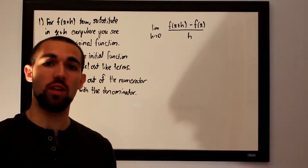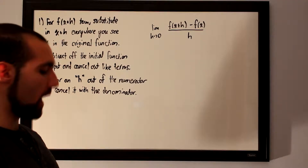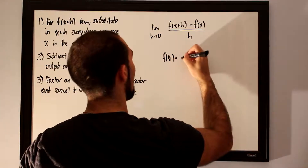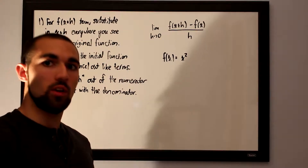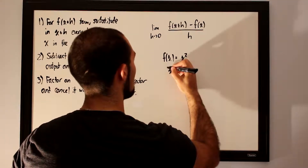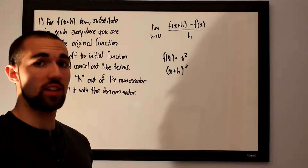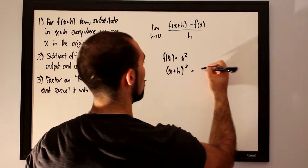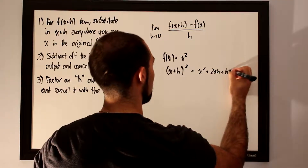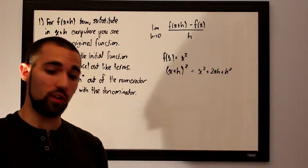All you really need to do is substitute in x plus h wherever you see x in the initial function. Say we have the function f of x equals x squared. Wherever we see x, replace it with x plus h, so this becomes x plus h squared. Afterward, you'll need to distribute it to cancel out like terms. So x plus h squared distributes to x squared plus 2xh plus h squared.